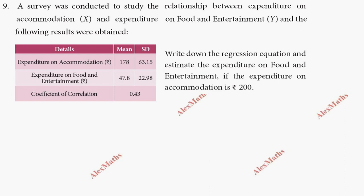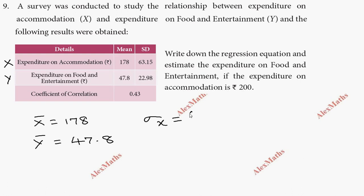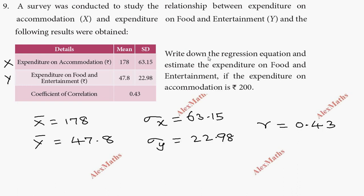Hi students, this is Alex. In the table, we have expenditure on accommodation and expenditure on food and entertainment. The given values are x-bar equal to 178 and y-bar equal to 47.8, sigma x equal to 63.15 and sigma y equal to 22.98, and the coefficient of correlation r equal to 0.43. We need to find the regression equation to estimate the expenditure on food and entertainment.